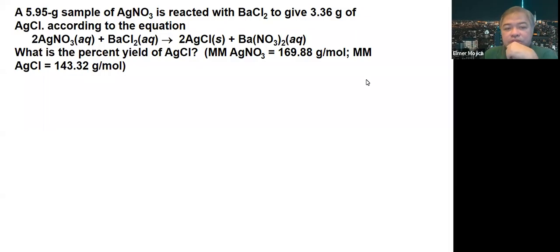In this problem, you are given a 5.95 gram sample of silver nitrate is reacted with barium chloride to give 3.36 grams of silver chloride.